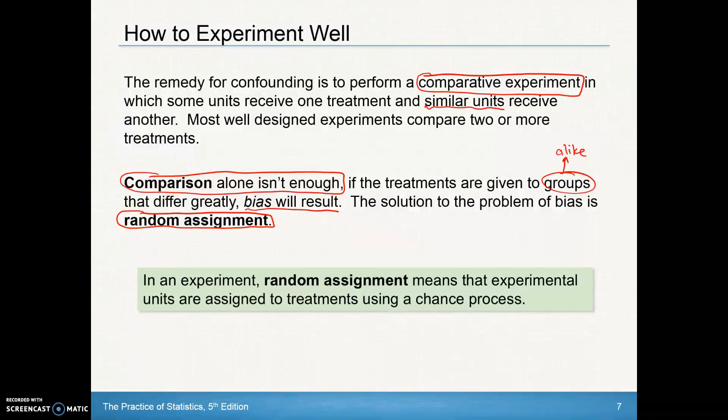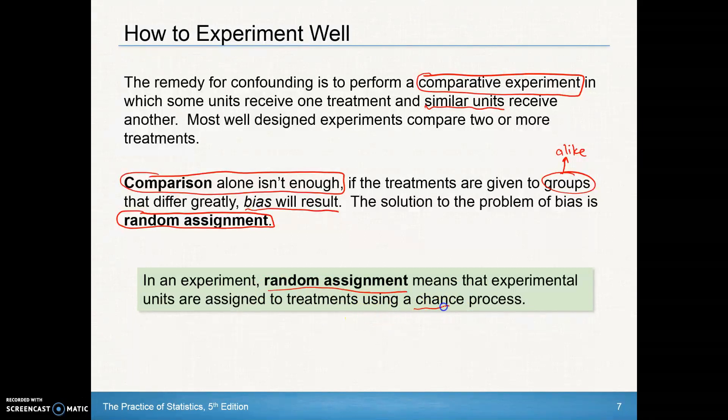So in an experiment, random assignment simply means that experimental units are assigned to treatments using a chance process.